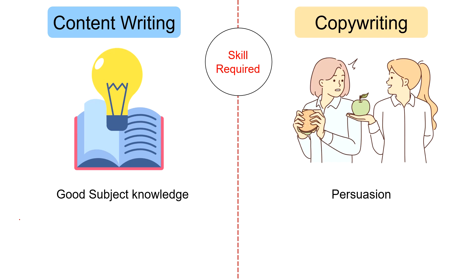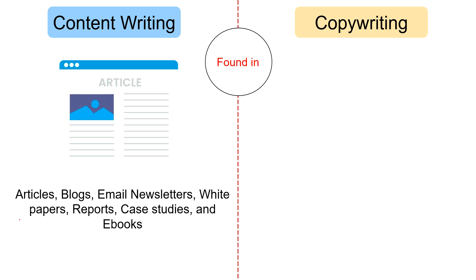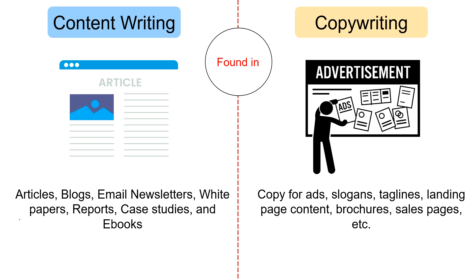The copywriter must have a knowledge of human psychology to influence people in a better way. In terms of where they are found, you can find content writing in the form of blogs, ebooks, email newsletters, magazine features, scripts for social media content, how-to guides, news articles, social media posts, etc. Conversely, you can find copywriting in the form of brochures, billboards, taglines, landing page content, copy for ads, email campaigns, product pages, radio scripts, etc.